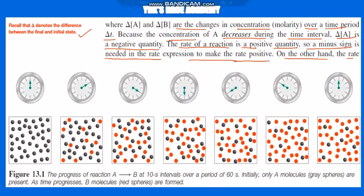Looking at diagram 13.1, it shows the progress of reaction A→B at 10-second intervals over a period of 60 seconds — giving us 6 diagrams. Initially, only A molecules shown as gray spheres are present. As time progresses, B molecules shown as red spheres are formed. Gradually, A molecules are converted into B molecules, as shown in the diagrams from 0 seconds through to 60 seconds.